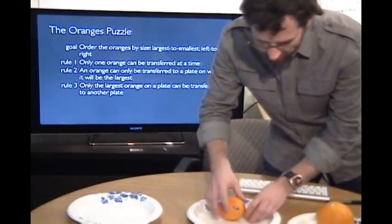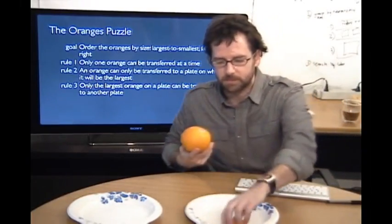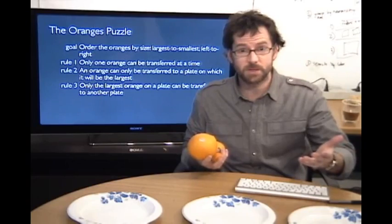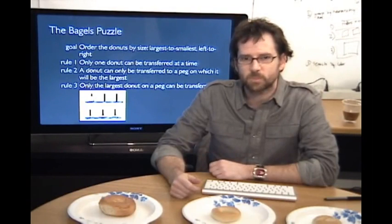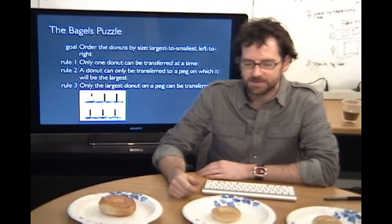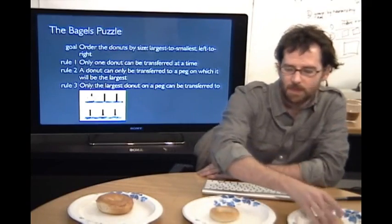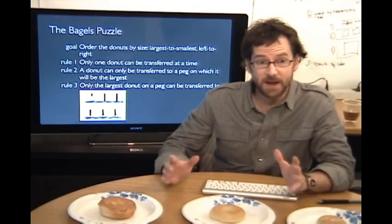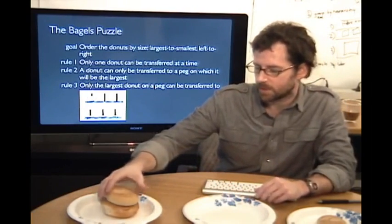And there's a couple other diners who got similar orders. They all wanted bagels. So they had a first course of oranges. The second course is going to be bagels. The real bagels puzzle is, why can't you get a decent bagel in California? But the bagels puzzle that we have for today is a little bit different. So we have our largest bagel, medium bagel, smallest bagel. So the plan is the same, except with the bagels, you have the ability to stack them. You can put a larger bagel on top of a smaller bagel, but not a smaller bagel on top of a larger one.